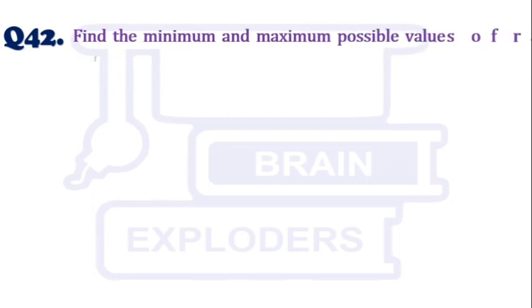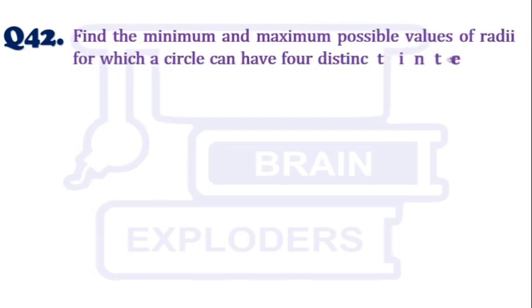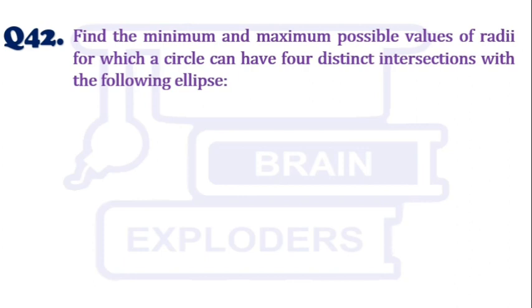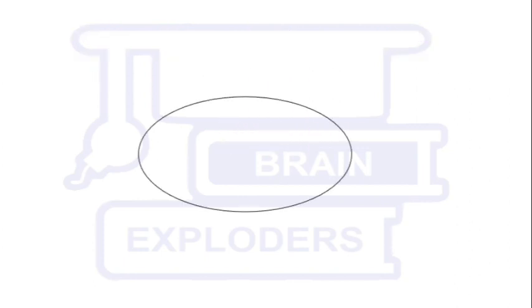Find the minimum and maximum possible values of radii for which a circle can have four distinct intersections with the following ellipse. Suppose this is an ellipse and this red circle is intersecting this ellipse at four distinct points.